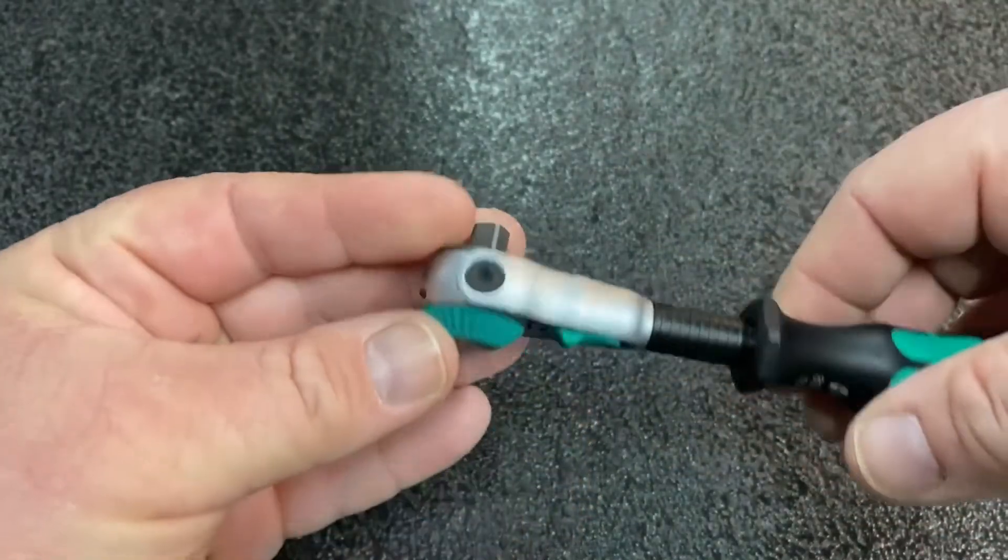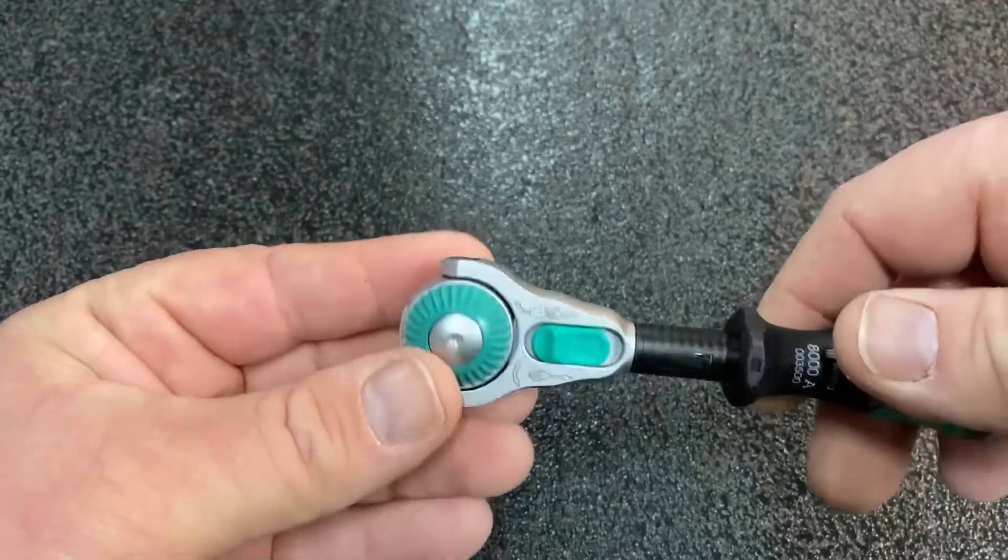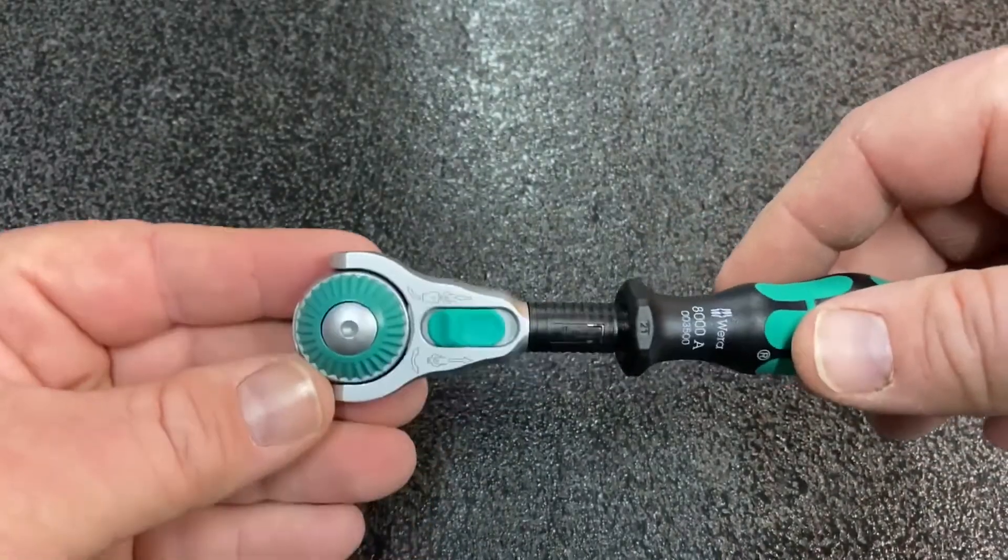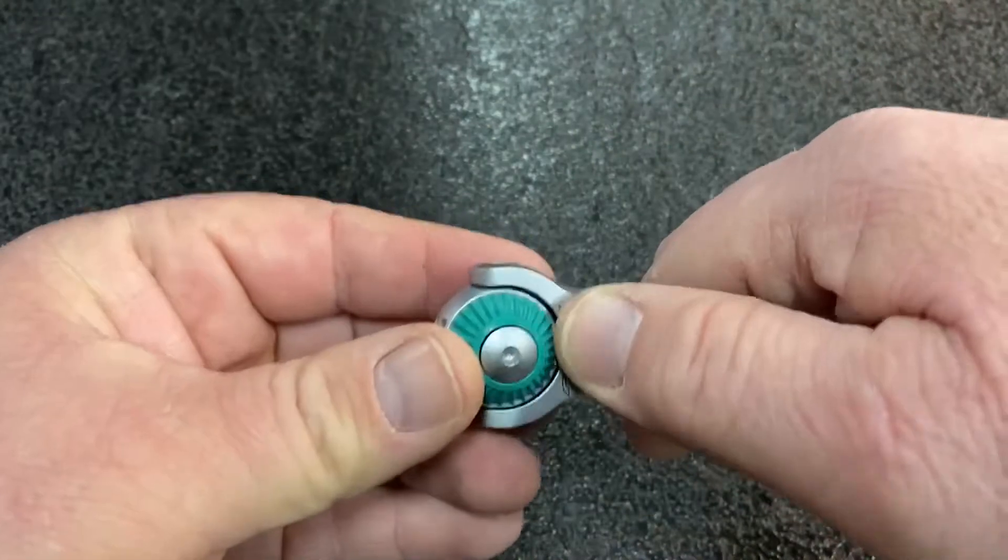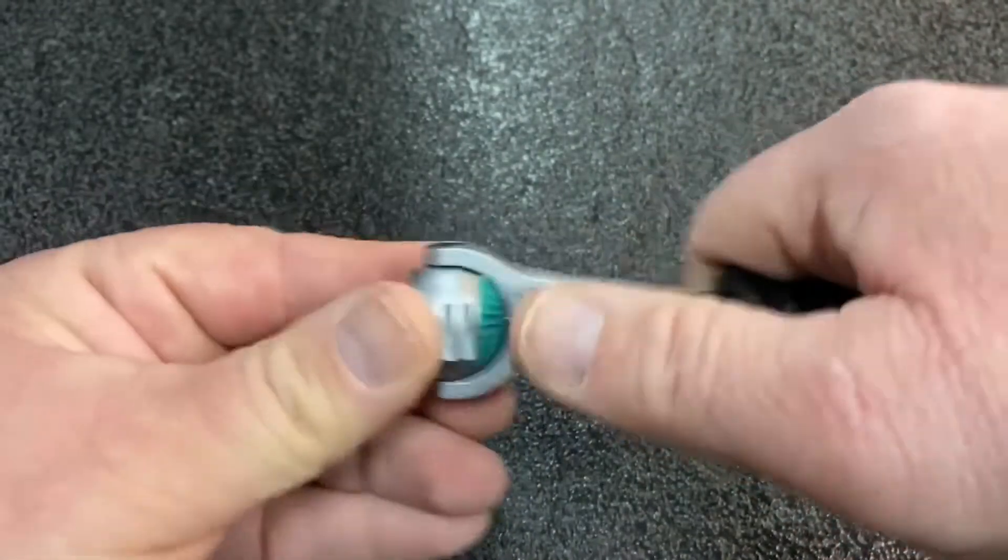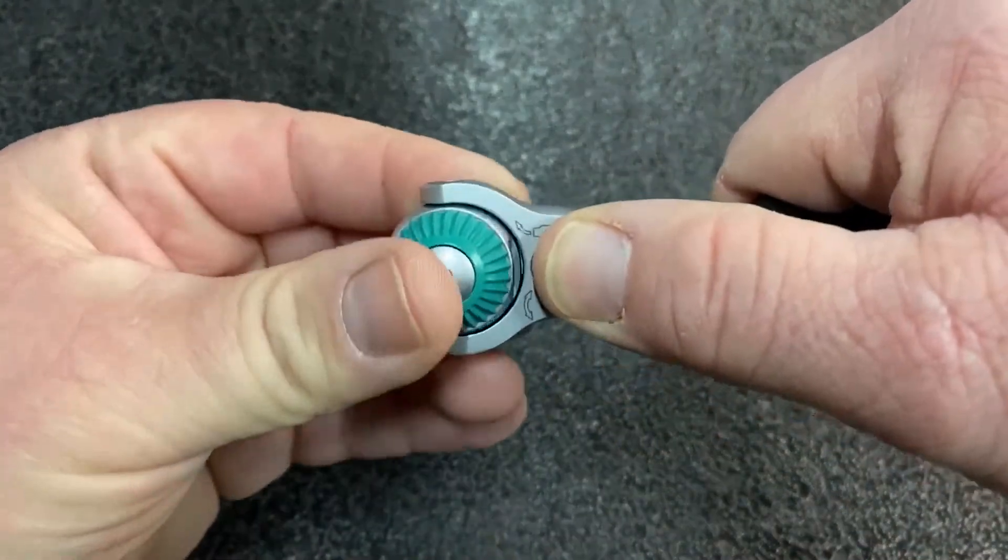What you see is your standard swivel head quarter inch drive ratchet, and you're able to tilt it any way you want. So I'll show you some of the things I'm talking about.